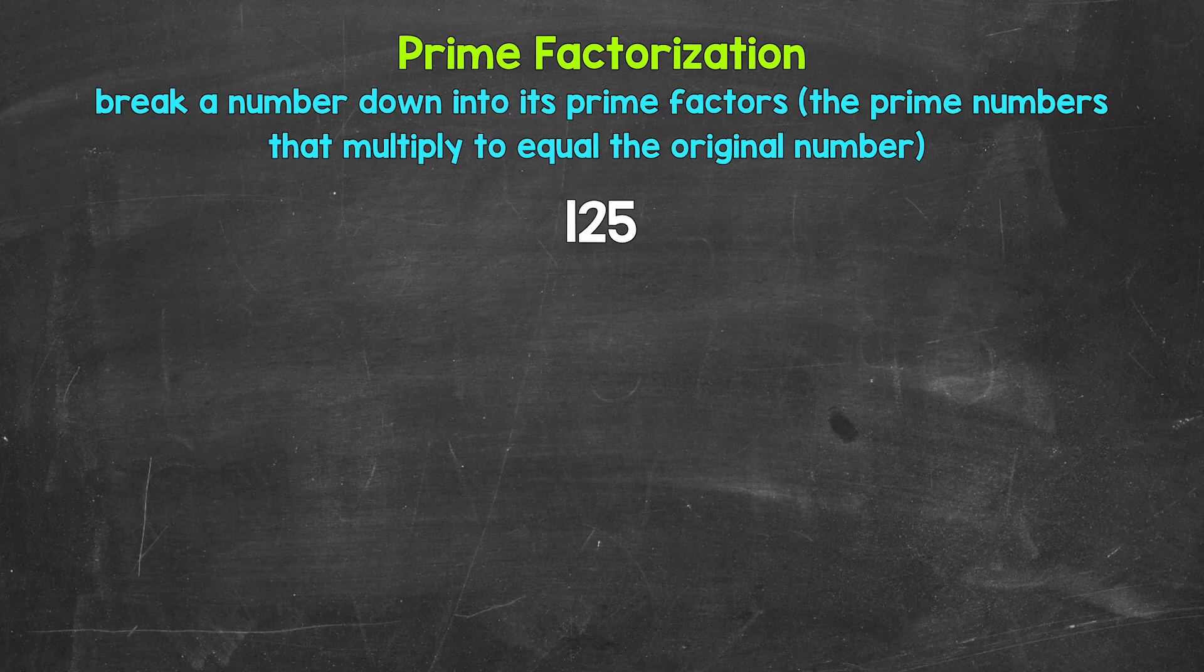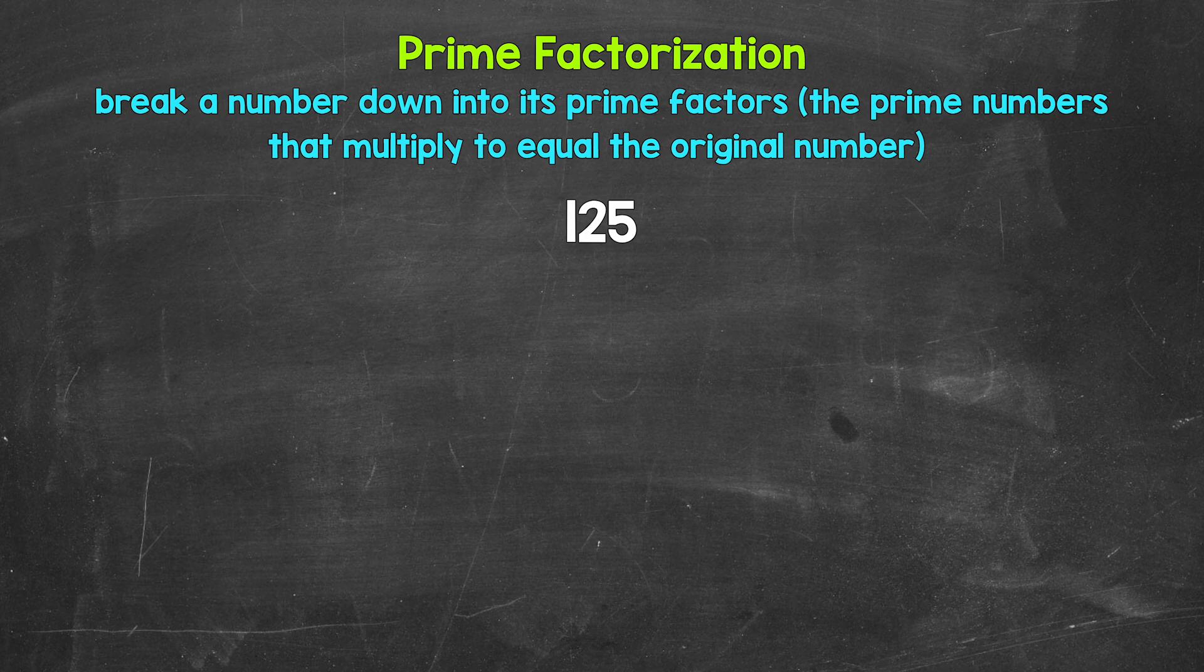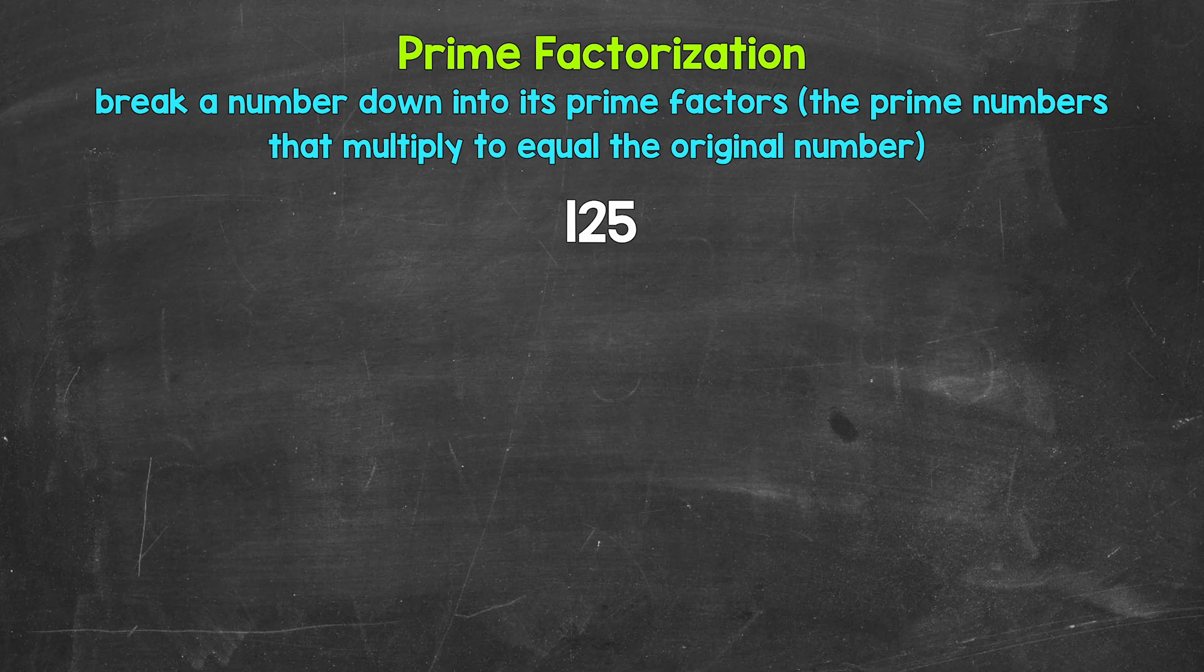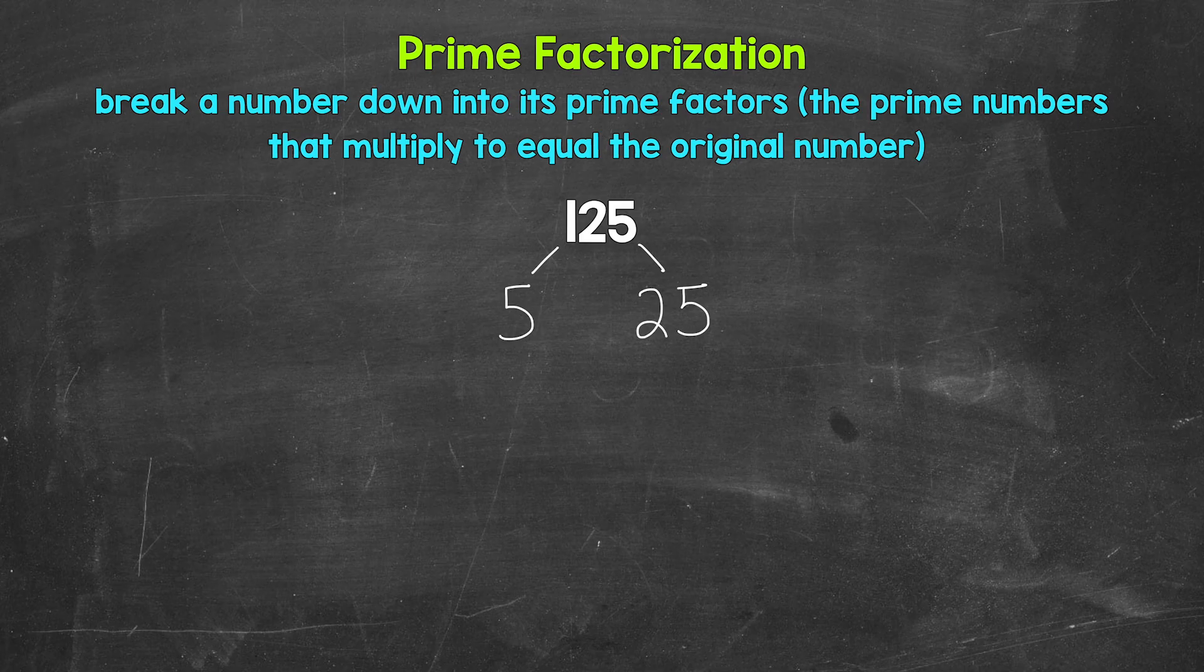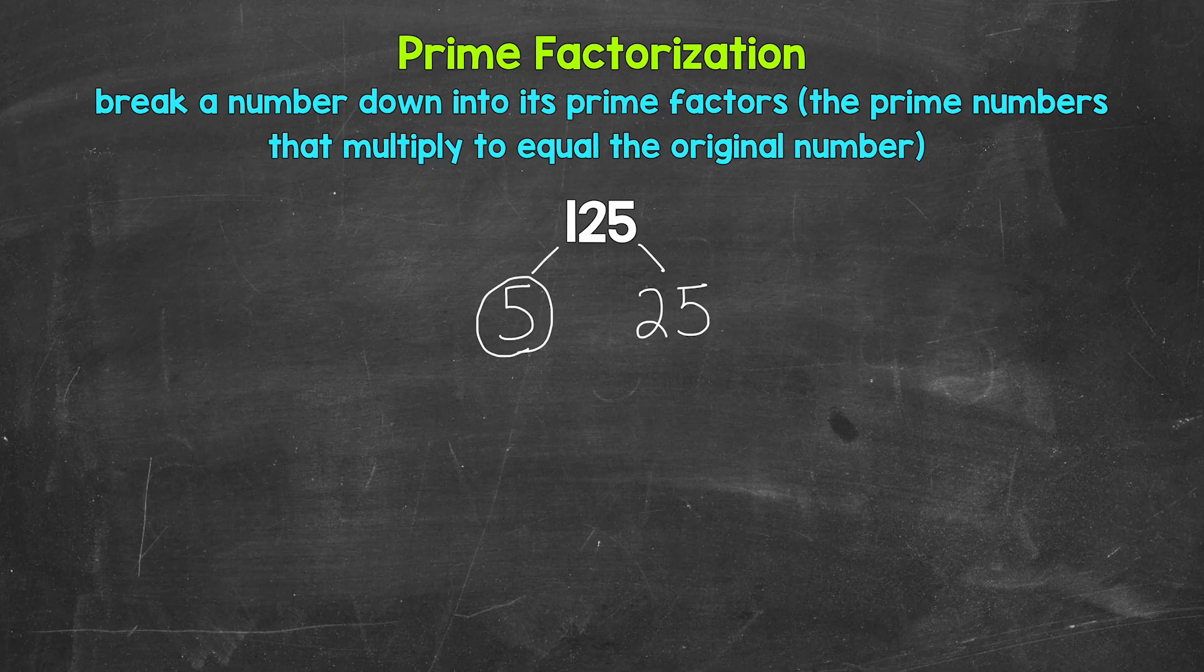Well, 5 and 25 are factors of 125. 5 times 25 equals 125. So let's break this down into 5 and 25. Now 5 is a prime number, so we are done here. We can't break that down any further. So let's circle 5 to show that we have a prime number.